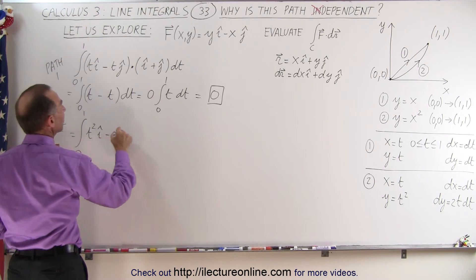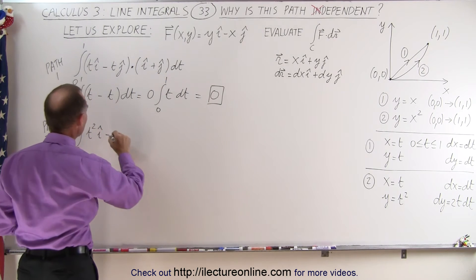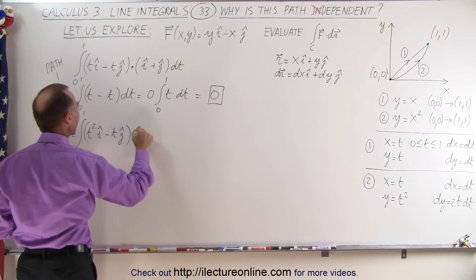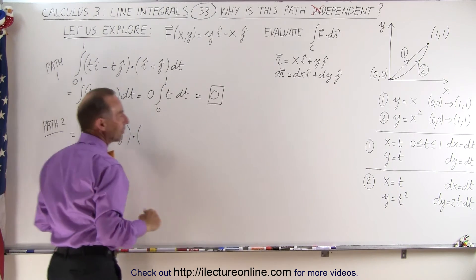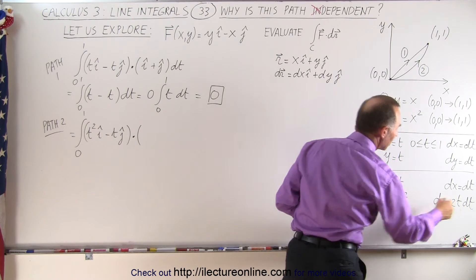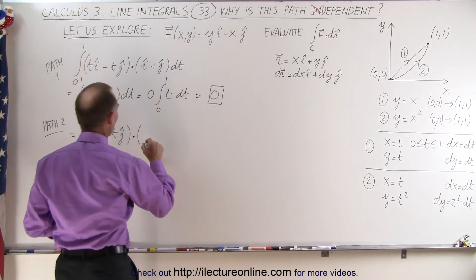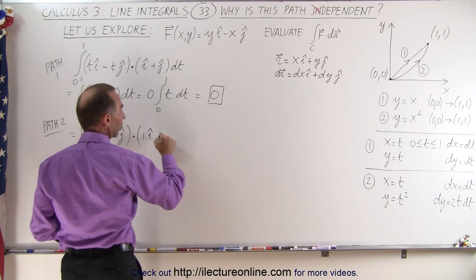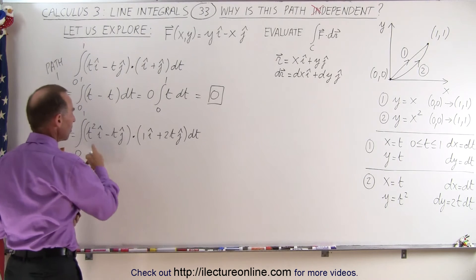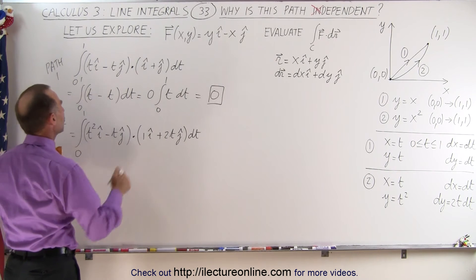minus x, which is going to be t in the j direction, and then we multiply this via dot product with dr. Now dr is going to consist of dx and dy, which is dt and 2t dt. So this is 1 times i plus 2t times j times dt.